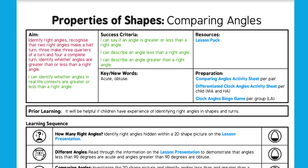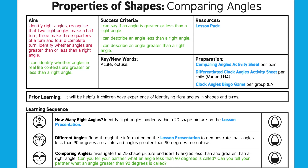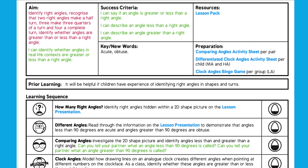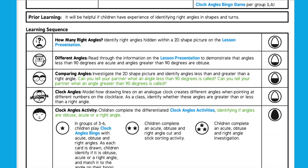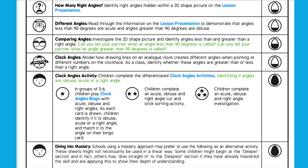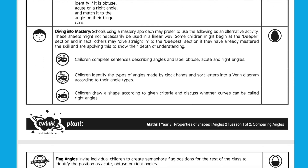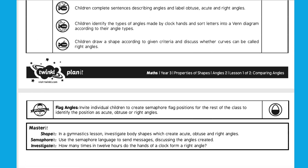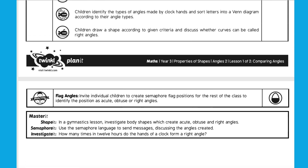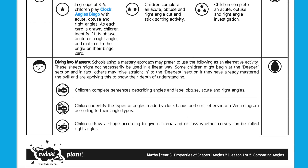The great thing about the lesson plan is that it has everything outlined that you need to do for that particular lesson — what prior learning is needed before teaching the lesson. It also includes the aims and resources for that lesson and goes through a step-by-step of the lesson, also known as the learning sequence.